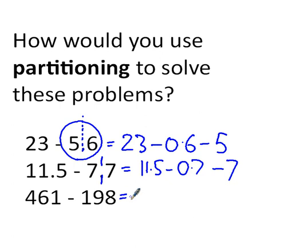And with this one, I get to split it twice. So, I'd split it here and here. 461 take away 8, take away 90, take away 100. That's pretty easy to do, isn't it? 461 take away 8 is going to give me something like 453, and then take away 90, and then take away a further 100. I can do that probably quite easily.